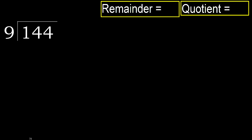144 divided by 9. 1 is less, therefore next. 14 is not less, therefore with 14. 9 multiplied by which number is nearest to 14 but not greater? 9 multiplied by 2 is 18 — 18 is greater. 9 multiplied by 1 is 9, it is not greater. 14 minus 9 is 5.